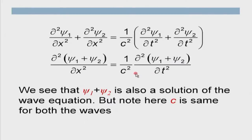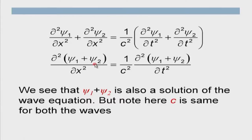Similarly, instead of psi 1 plus psi 2, if I write A psi 1 plus B psi 2, there will be an A and B on both sides, which can be factored out — so A psi 1 plus B psi 2 is also a solution. In general, if I have 3, 4, 5, n, or infinite waves, they can all superimpose and will all be solutions. So this particular equation allows superposition.